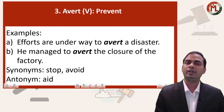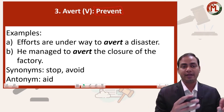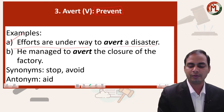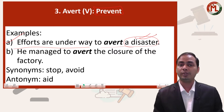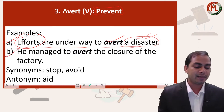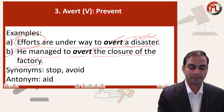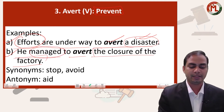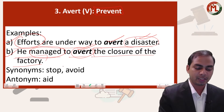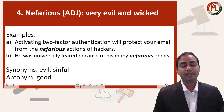The next word in the list is 'avert'. Avert is directly interchangeable with 'prevent', so this is a synonymous idea — directly interchangeable. For example: efforts are underway to avert the disaster, which is the same as 'to prevent'. Another example is: he managed to avert the closure of the factory.